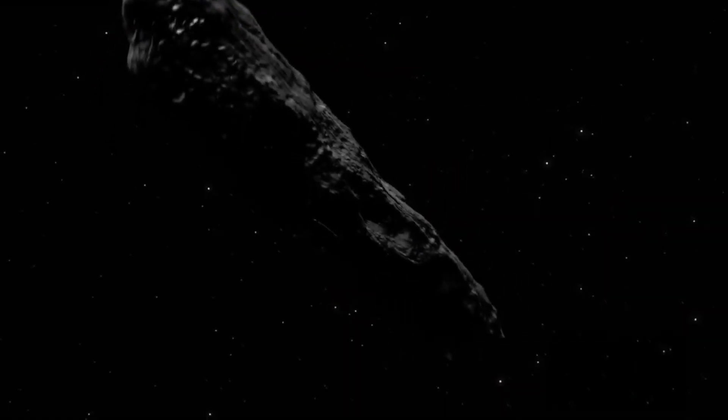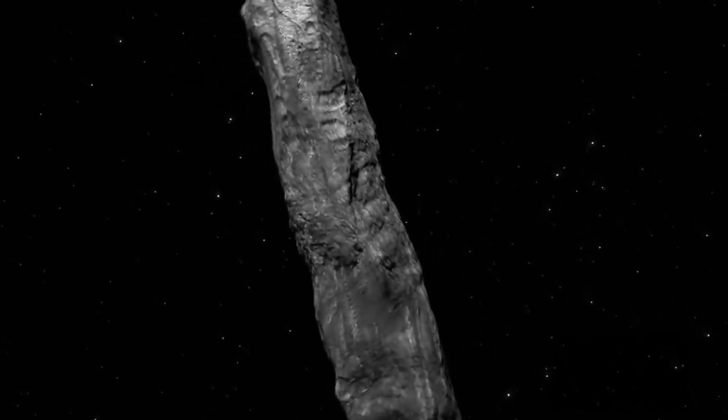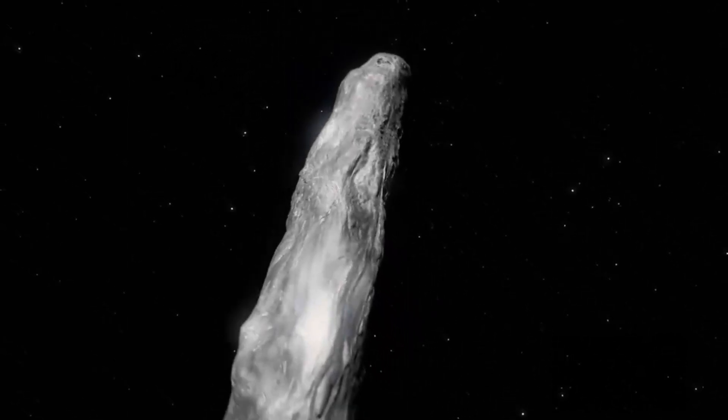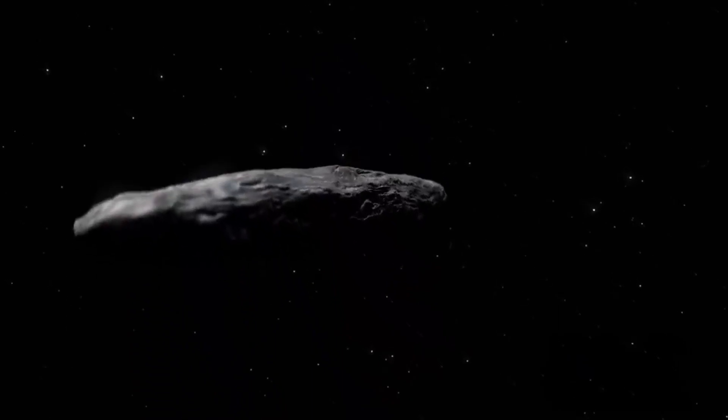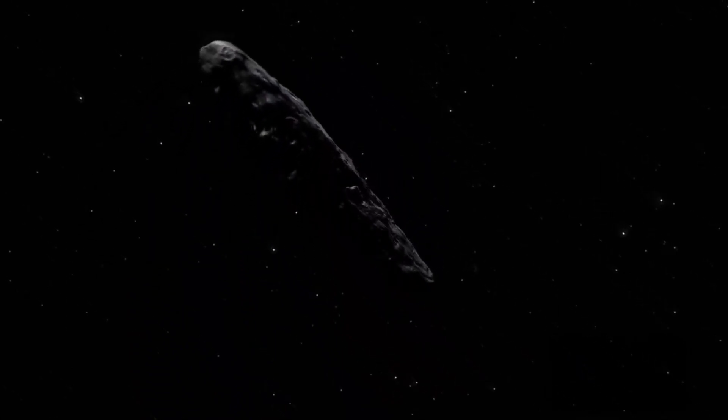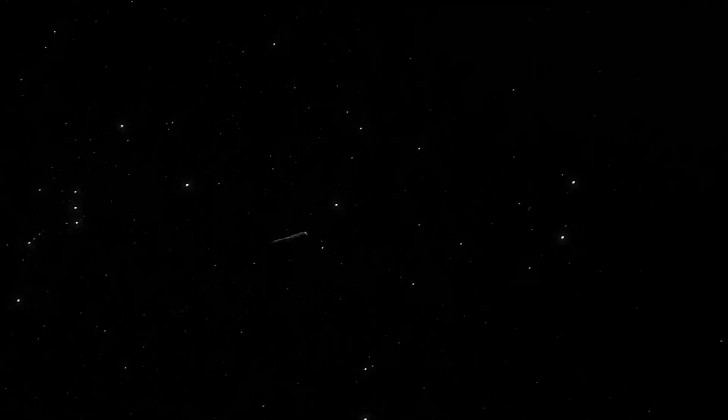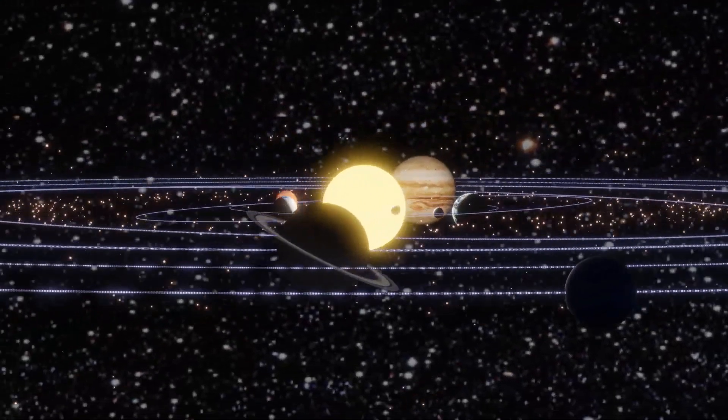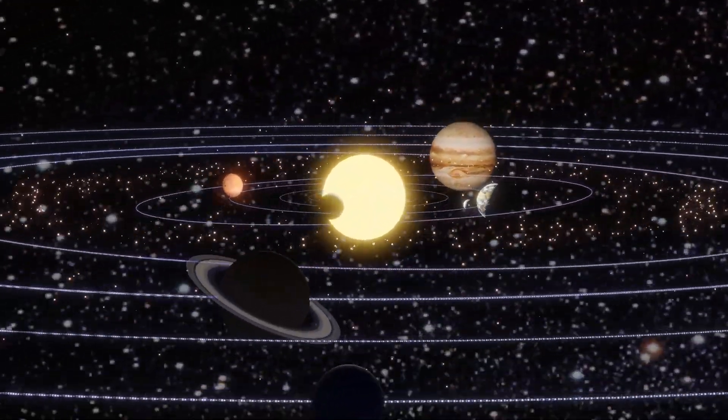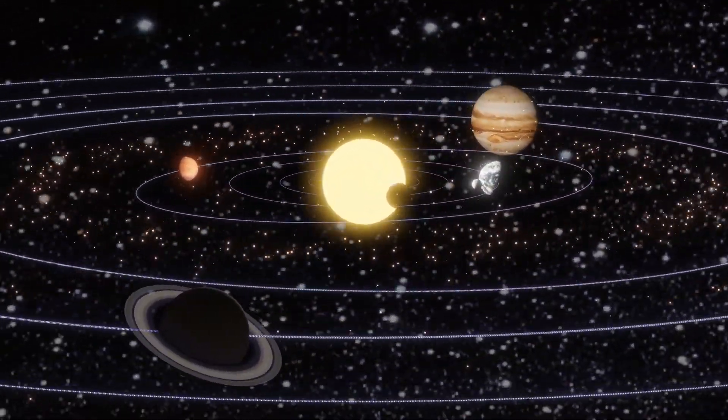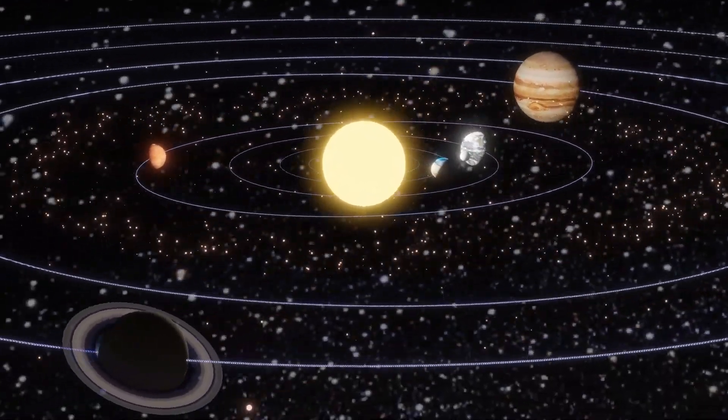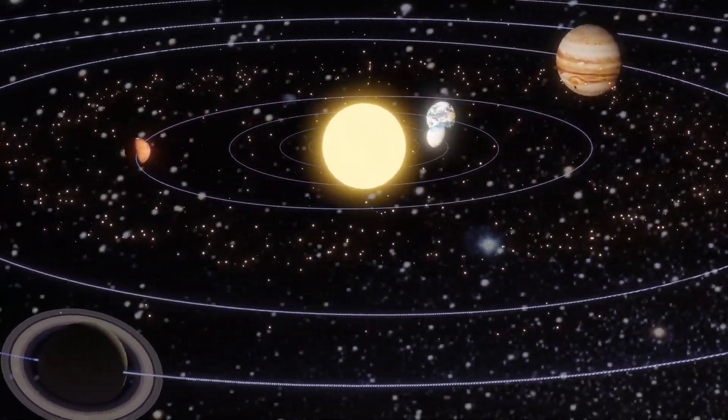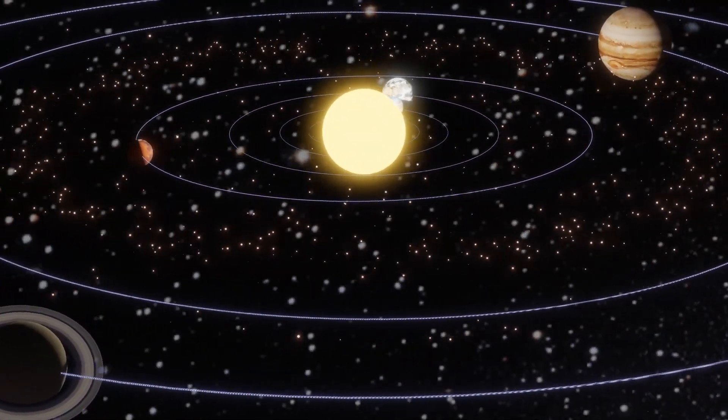The shape of Oumuamua was also noteworthy. The preliminary measurements indicated that the object exhibited a long cylindrical shape with a size ratio of 10 to 1. Nevertheless, astronomers subsequently made adjustments to these measurements, resulting in an approximate ratio of 6 to 6 to 1, which is indicative of a flatter, pancake-like structure.